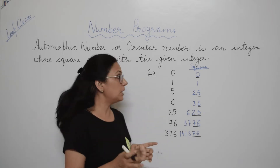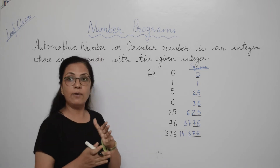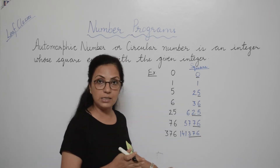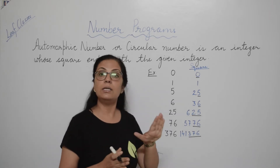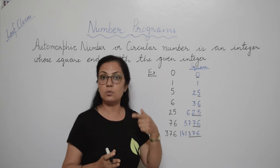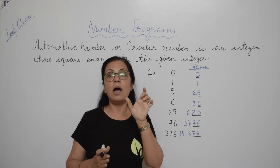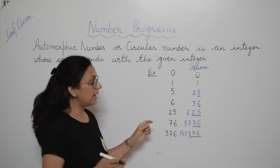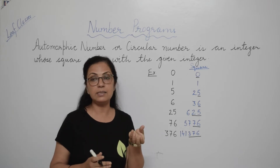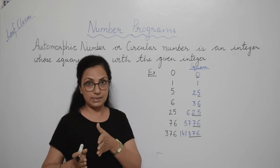Now how will we proceed and what logic will we use? First, we have to find the number of digits in the given integer — the integer which the user is entering. Once you know how many digits are there, then you have to extract that many digits from the square of the number, from the right side. Then you compare.